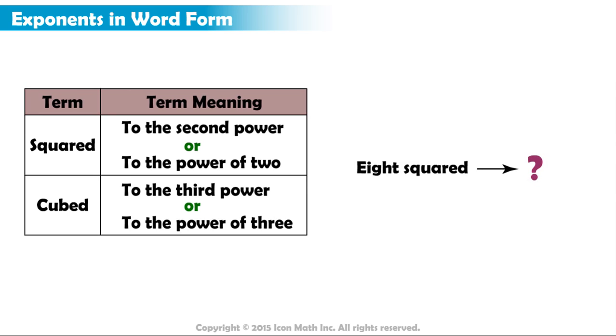What is the exponential notation of 8 squared? Since squared means to the power of 2, 8 squared is equal to 8 to the power of 2.